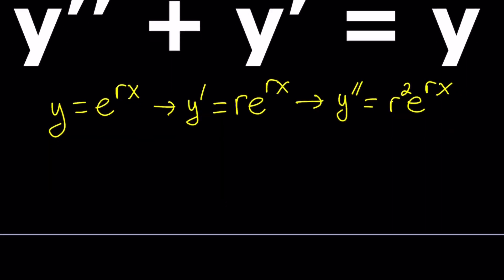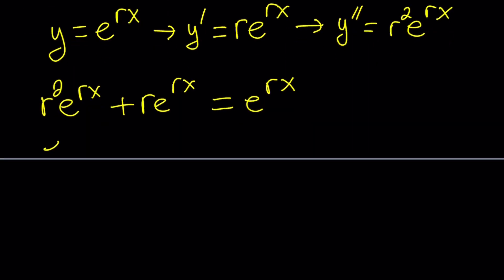So y double prime is r squared e to the rx plus y prime is r e to the rx. And the whole thing, the sum, is equal to y, which is e to the power rx. Interesting. We got an equation. Now let's go ahead and simplify this. Notice that on the left hand side, I can go ahead and factor out e to the rx.